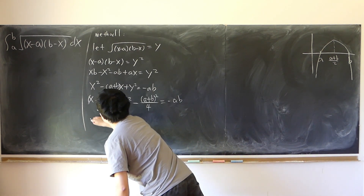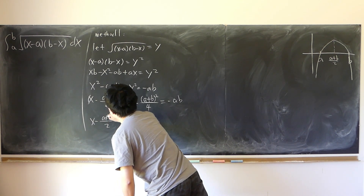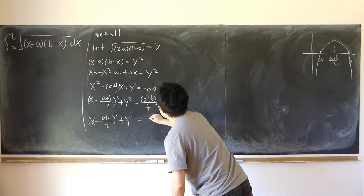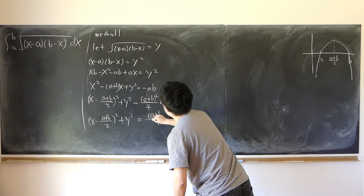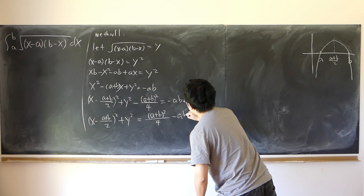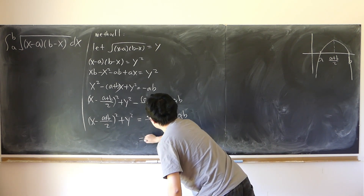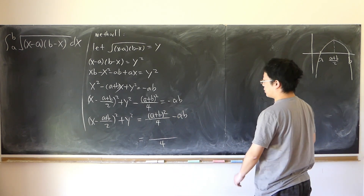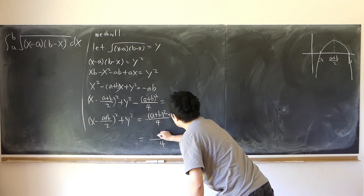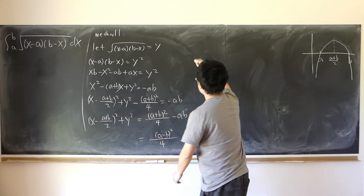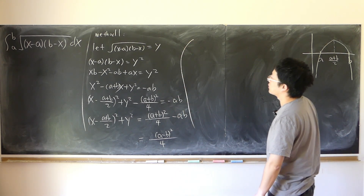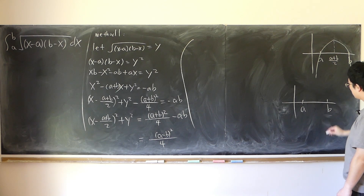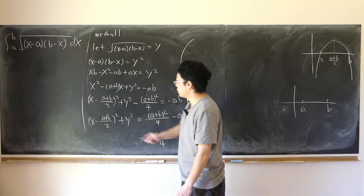Rearranging: (x minus half(a plus b))² plus y² equals (a plus b)²/4 minus ab, which equals (a minus b)²/4. So this is essentially the equation of a circle, with center at (half(a plus b), 0) and radius half of (b minus a), assuming a is less than b.